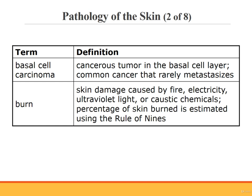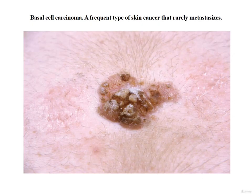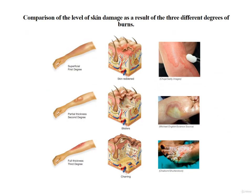The seriousness of a burn depends upon the amount of body surface involved and the depth of the burn as determined by the damage to each skin layer. Burns are categorized as superficial, partial thickness, or full thickness. The extent of a burn is estimated using the rule of nines. This slide shows a photograph of a basal cell carcinoma — remember, these carcinomas are frequent but they rarely metastasize to other parts of the body. This slide compares the level of skin damage from the three different degrees of burns: superficial or first degree, partial thickness or second degree, and full thickness or third degree.